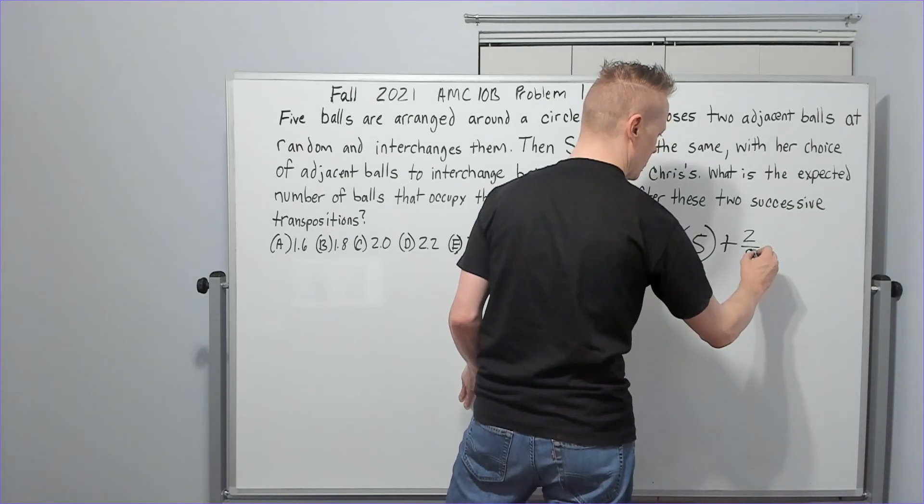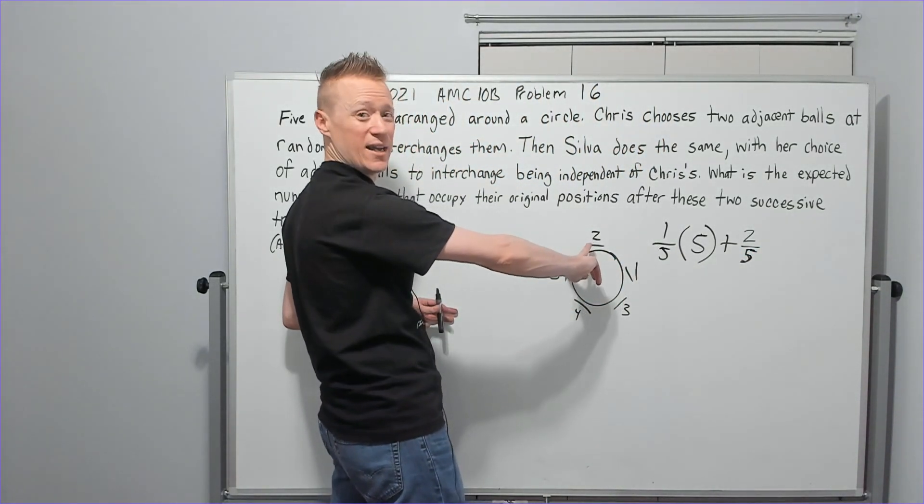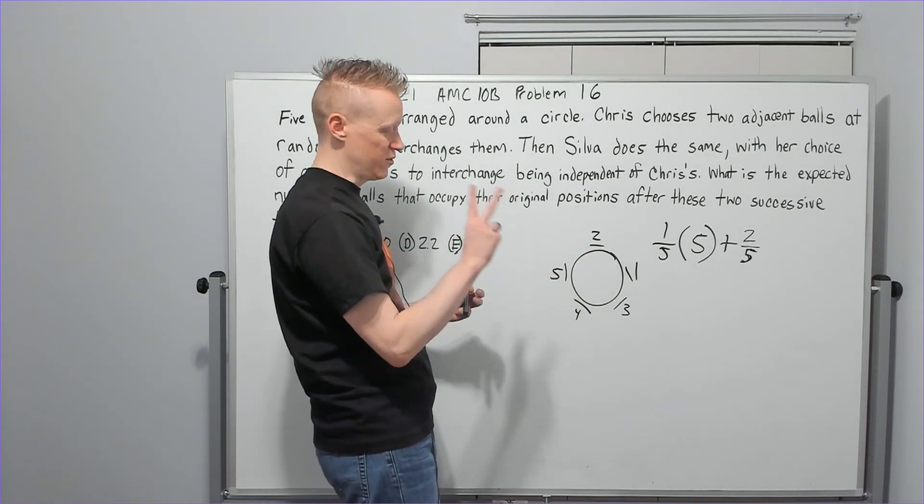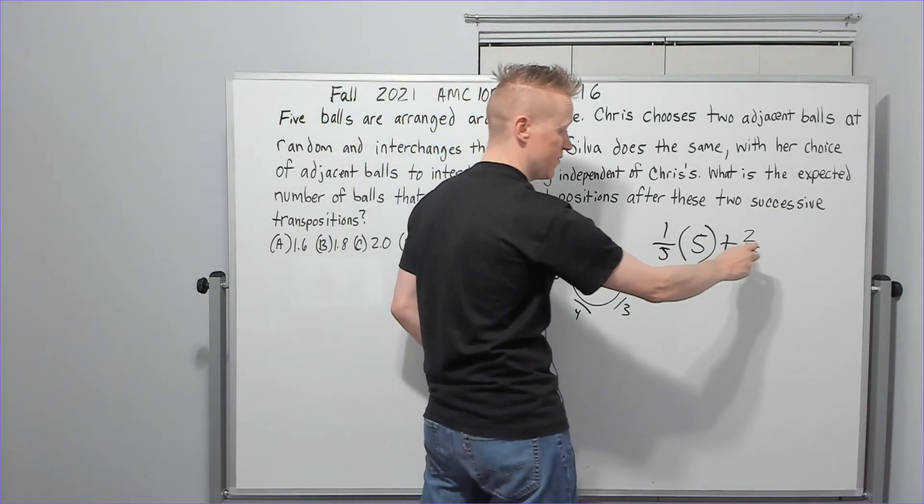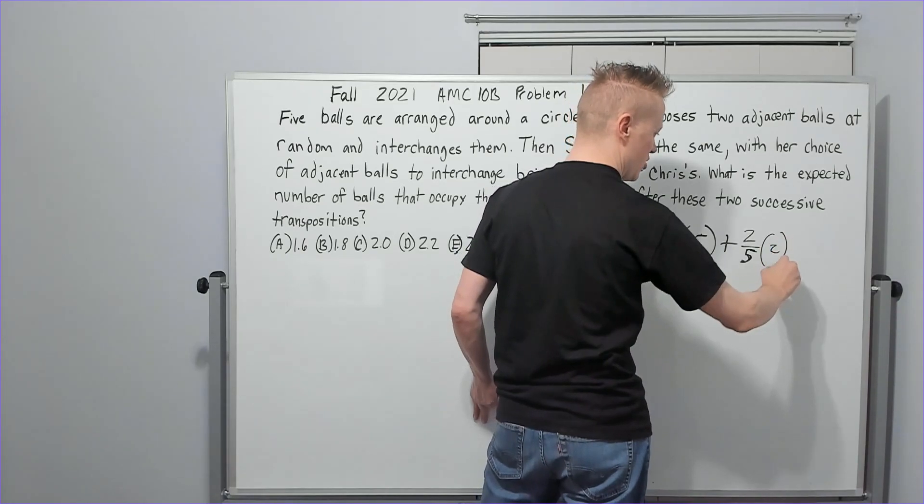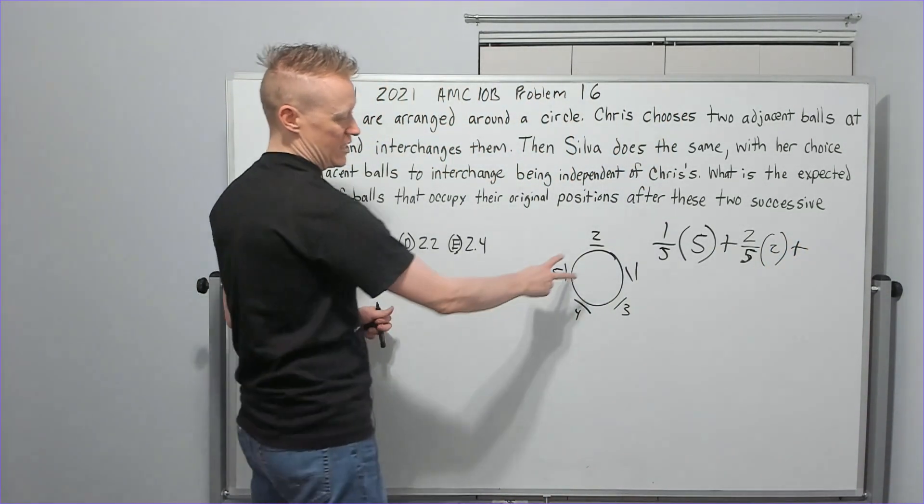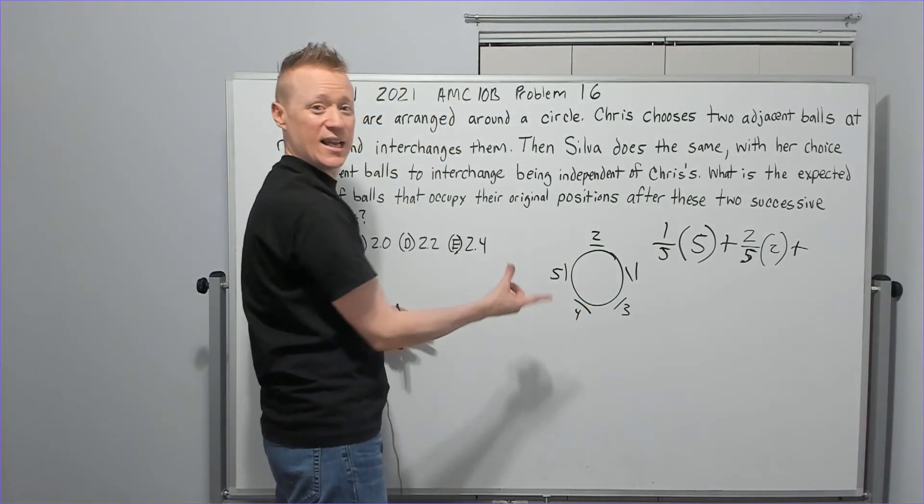The chance that she chooses one of those types of scenarios is the one and three or the five and two. Either of those selections by her, which are two of her five, would result in this occurrence. So the probability of it, two fifths, times the value of it, two, plus the other possibility is that she chooses either of these two cases, three and four, and four and five.